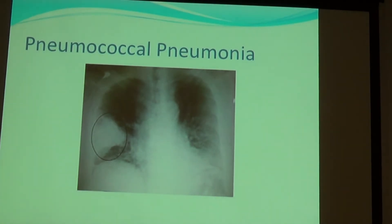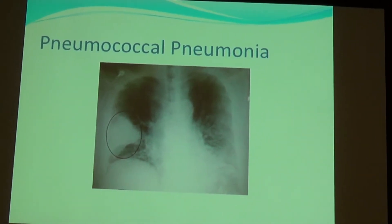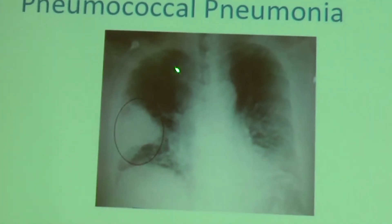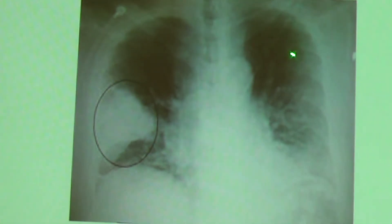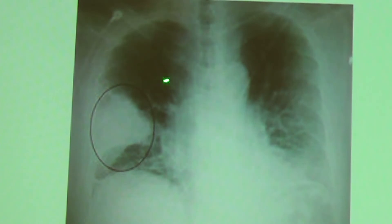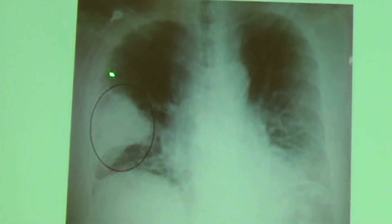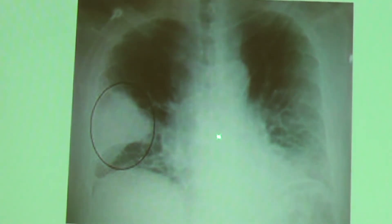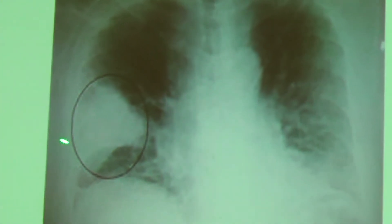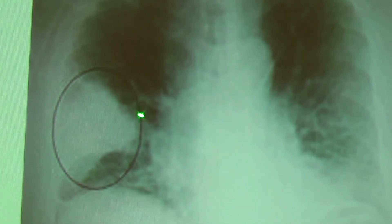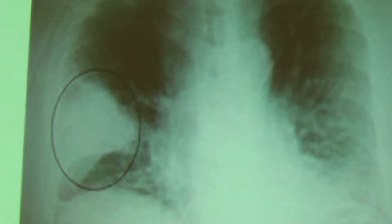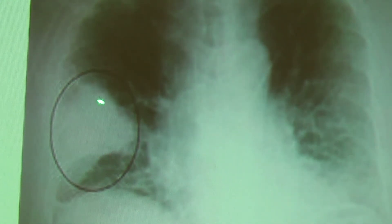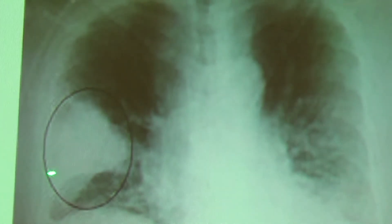Here's a chest X-ray showing classic pneumococcal pneumonia. Here are the lungs — the black area is nicely aerated healthy lung. Here's the spine and heart. And this white wedge-shaped area is where air is obscured because it's filled with fluid or infection — what we call a pizza-shaped consolidation. This is your classic pneumococcal or lobar pneumonia.